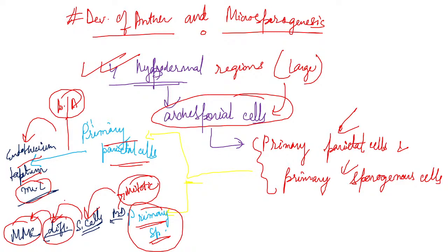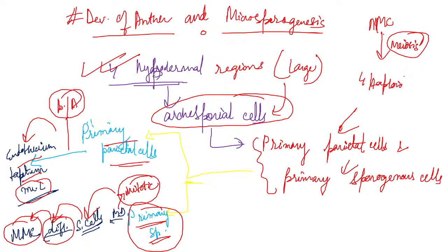The pollen grain is surrounded by two wall layers: the outer exine and the inner intine. The exine is thick, rigid, and made up of sporopollenin. The intine is thin, soft, elastic, and made up of pectocellulose. The sporopollenin layer is very non-biodegradable and highly resistant. When sporopollenin is absent in certain areas, those regions are called germ pores. The intine comes out through any one of the germ pores to form the pollen tube.